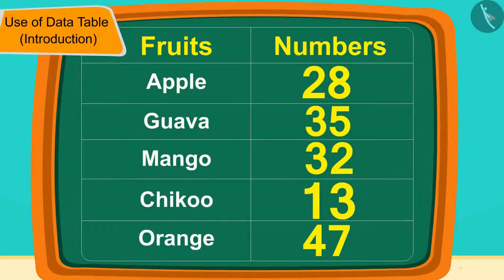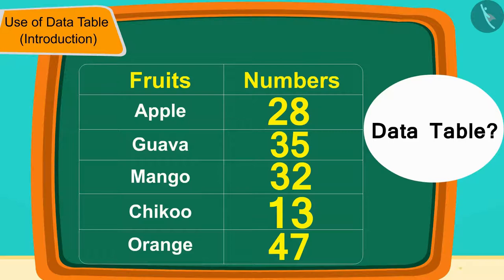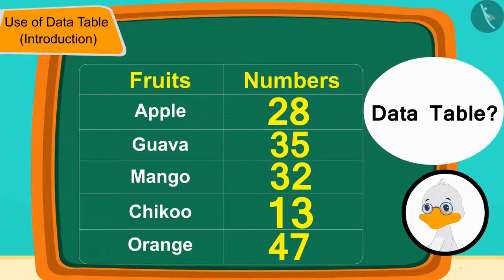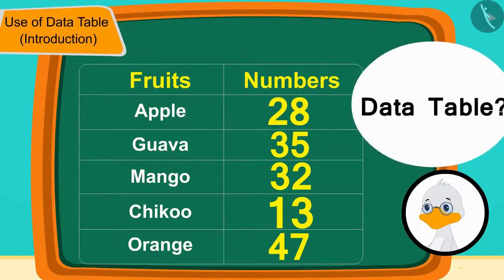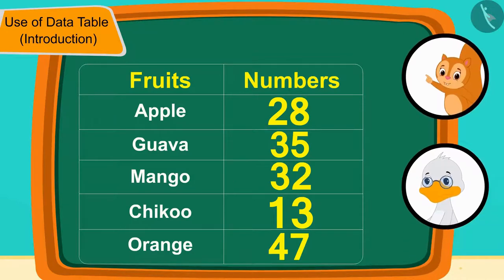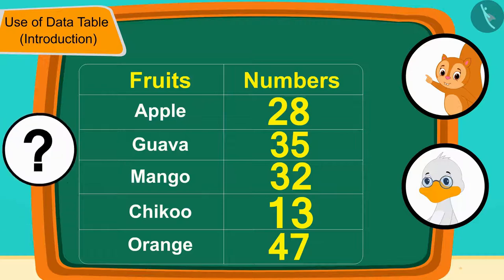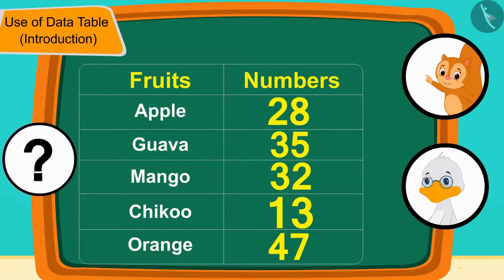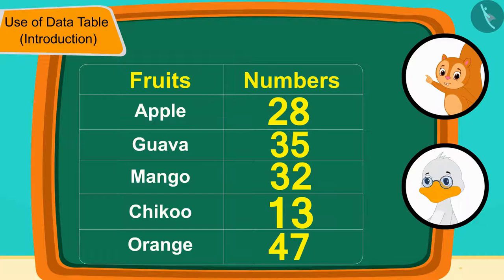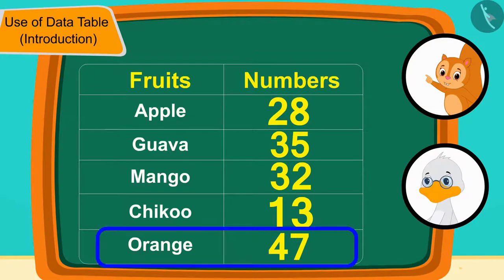Children, have you seen such a data table? Like uncle, if we want to find the numbers of many objects and draw some kind of conclusion from it, then we can use the data table. Chanda asked uncle, "Uncle, can you now tell which fruit is largest in number?" By looking at this table, can you tell which fruit is the largest in number? Well done, your answer is absolutely correct. The total number of oranges — 47 — is the largest.